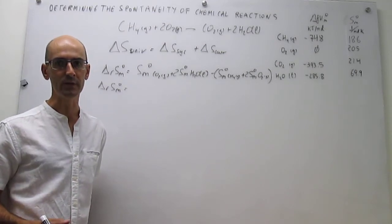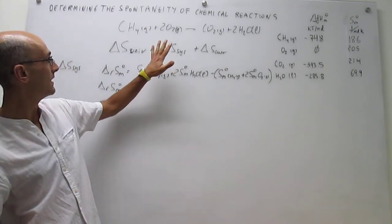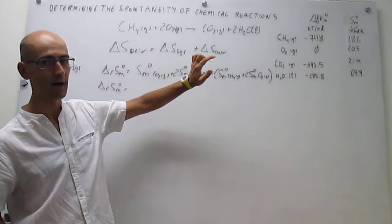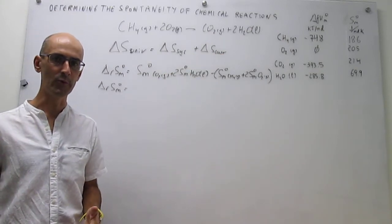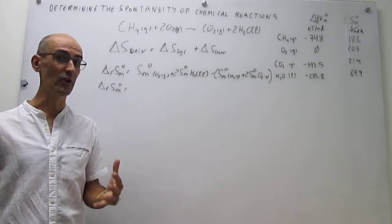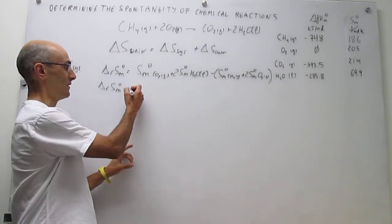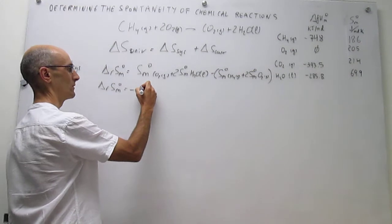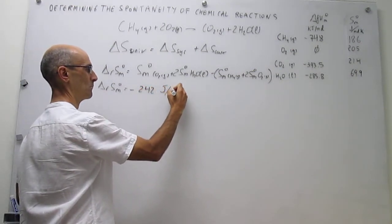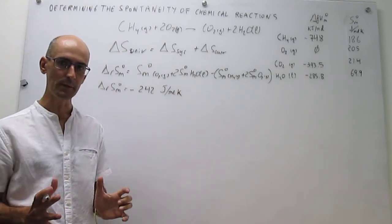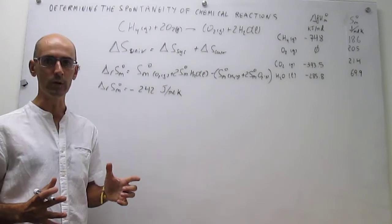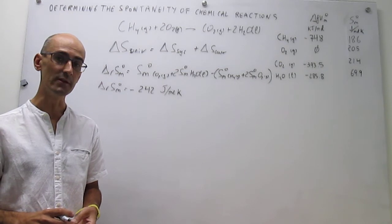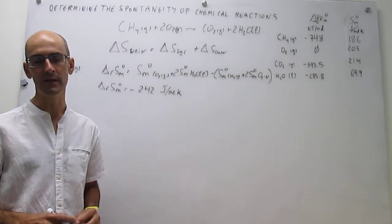Predicting the sign of changes in entropy is relatively straightforward. If we tally up the moles of gas in reagents and products, we have 3 moles of gas in reagents and 1 mole in products, so we are losing gas. Because gases are far more entropic than liquids and solids, we should expect a decrease in entropy, meaning the sign should be negative. When you punch the numbers into your calculator, you get that ΔS_system = −242 joules per mole Kelvin. With this number alone, we cannot conclude whether the reaction is spontaneous, because the criterion requires the change in entropy in the universe.